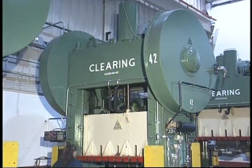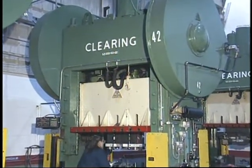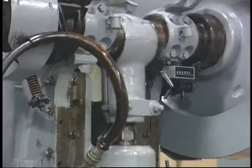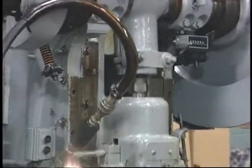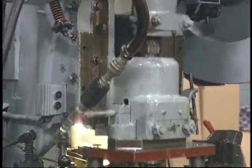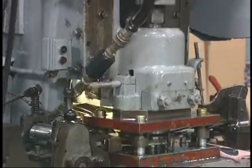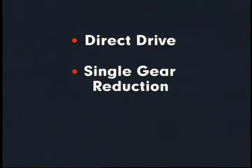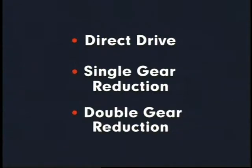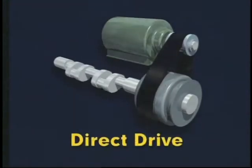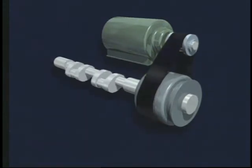Various press parts such as the pitman, connection, and bolster have similar functions in both straight side and gap frame presses. Several drive arrangements are used on mechanical presses to transform the rotary motion of the drive motor through the crankshaft to the reciprocating motion of the slide. These arrangements include direct drive, single gear reduction, and double gear reduction presses. In non-geared or direct drive presses, the flywheel is mounted to the end of the crankshaft and driven by belts from the motor, allowing higher operating speeds than geared type drives.